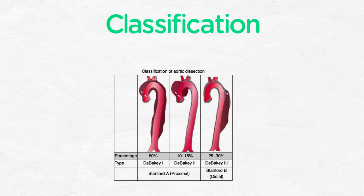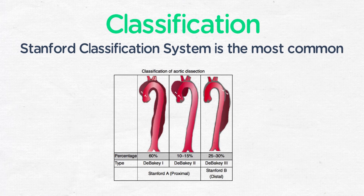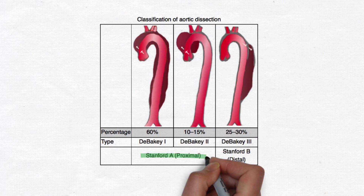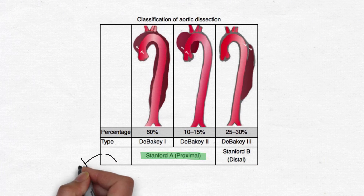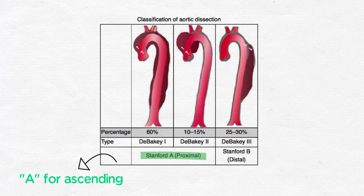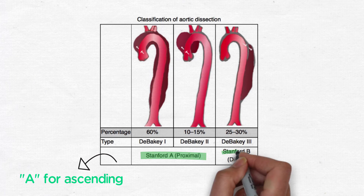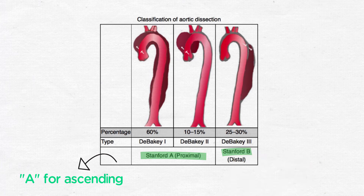You must know the classification scheme for aortic dissections. Look at the attached image carefully and learn it — it comes up on tests. The Stanford classification system is the more commonly used one and is easier to remember. Any dissection involving the ascending aorta is a type A — just remember A for ascending. A dissection that involves the descending aorta beyond the arch is a type B — remember B is for beyond the arch.